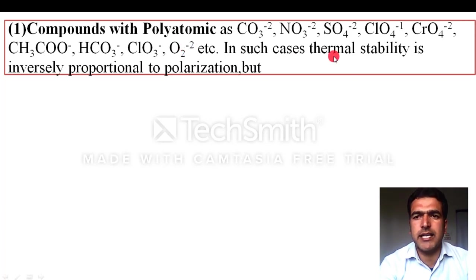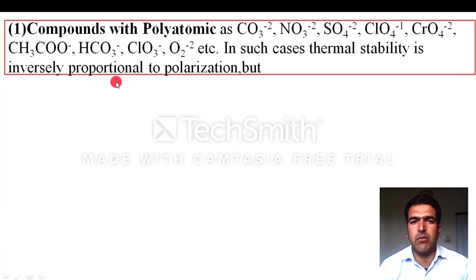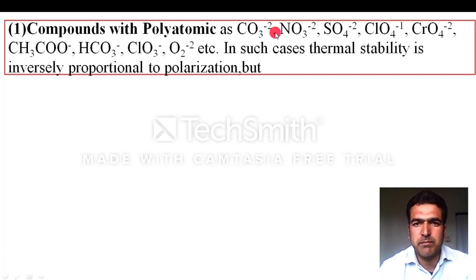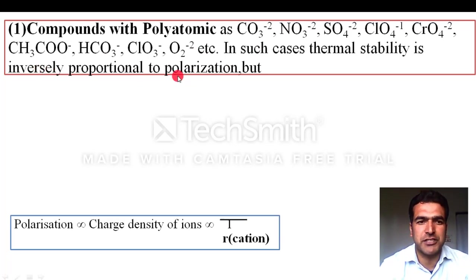Now for polyatomic anions — such as nitrate, sulfate, carbonate, acetate, bicarbonate, chlorate, and peroxide (O2²⁻) — the thermal stability is inversely proportional to polarization. So for compounds with polyatomic anions, thermal stability depends on polarization.